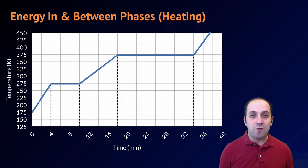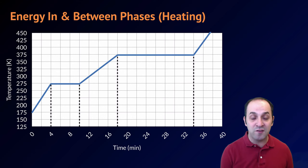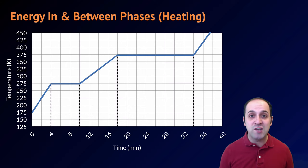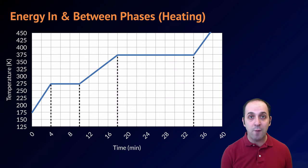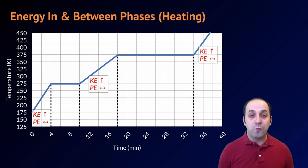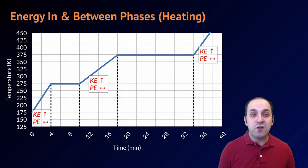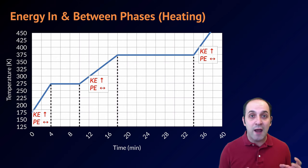Let's go back to a heating curve and see if we can understand what's happening in and between the different phases as we heat a substance, in terms of the energy we're putting in. A change in temperature equates to a change in the average kinetic energy for a substance. So on this heating curve, if we are putting in energy and the temperature is going up, the kinetic energy is also increasing. In each of the three intervals where temperature is rising, kinetic energy is increasing, while potential energy remains the same.